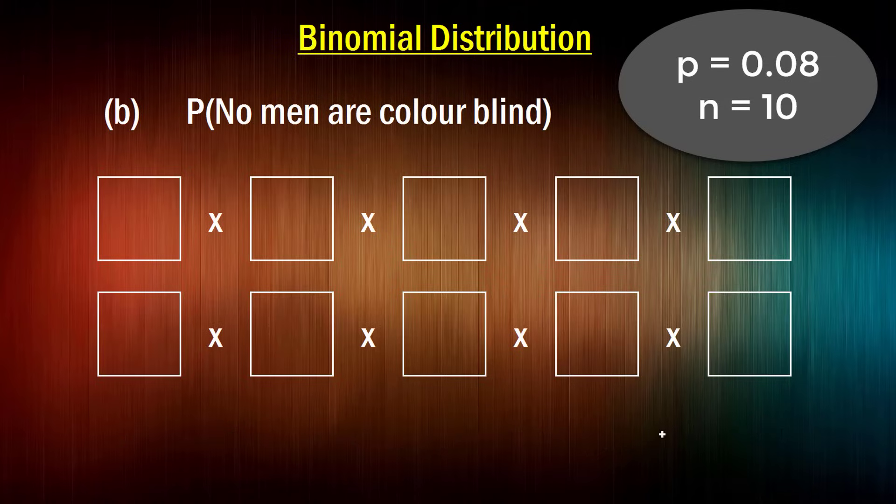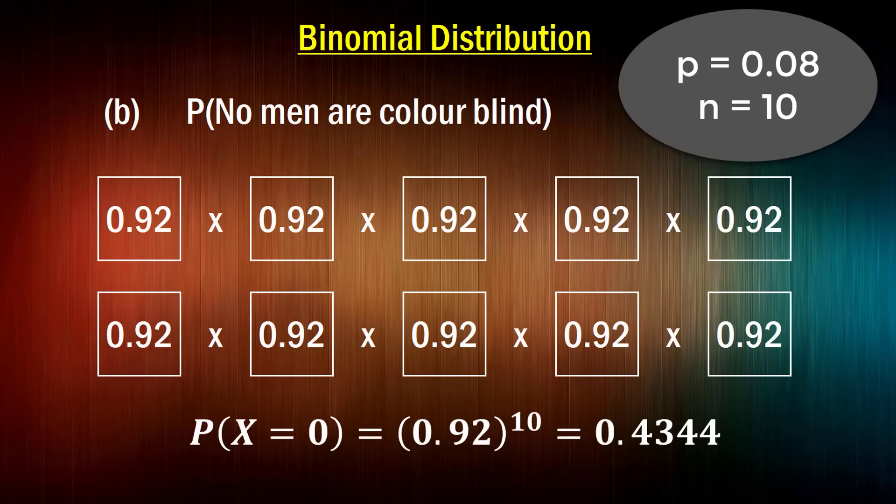What's the probability that no men are colorblind? Well, this should be equally simple. We know that the first man, second man, third man, in fact, all the men have to not be colorblind, and the chance of that happening is 0.92 on each occasion. So that's 0.92 to the power of 10, and we get 0.4344.